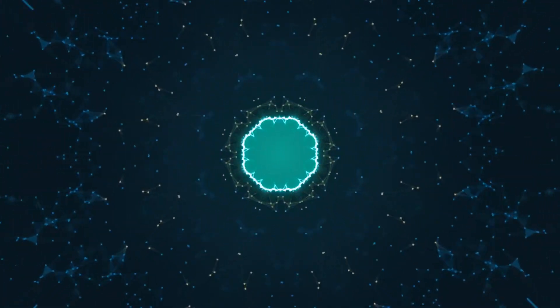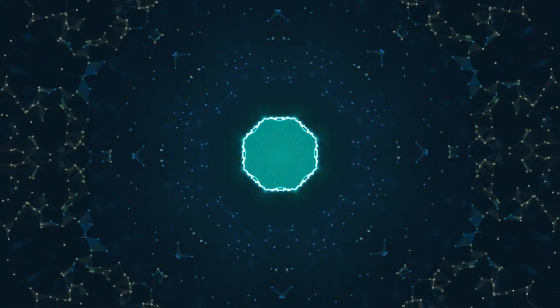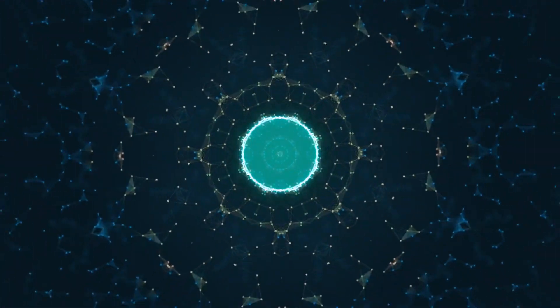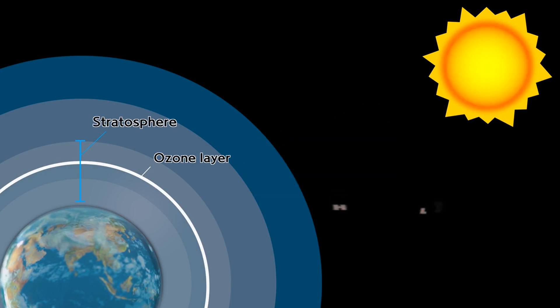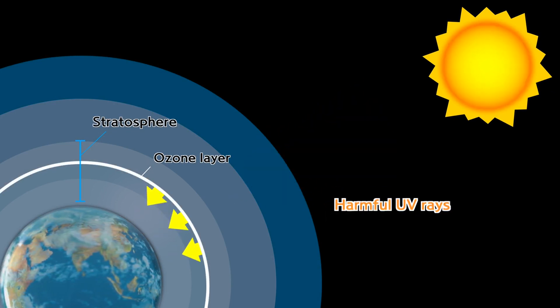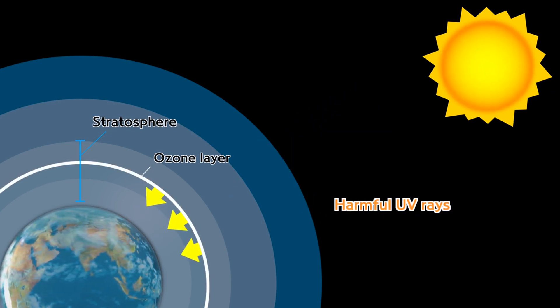While the prospect of a Betelgeuse supernova is undeniably captivating, it also prompts astronomers to consider the potential ramifications for Earth and its inhabitants. One of the primary concerns revolves around the emission of ultraviolet, UV, radiation during the supernova event. UV radiation, known for its ability to penetrate Earth's atmosphere, can have significant impacts on terrestrial ecosystems and human health.